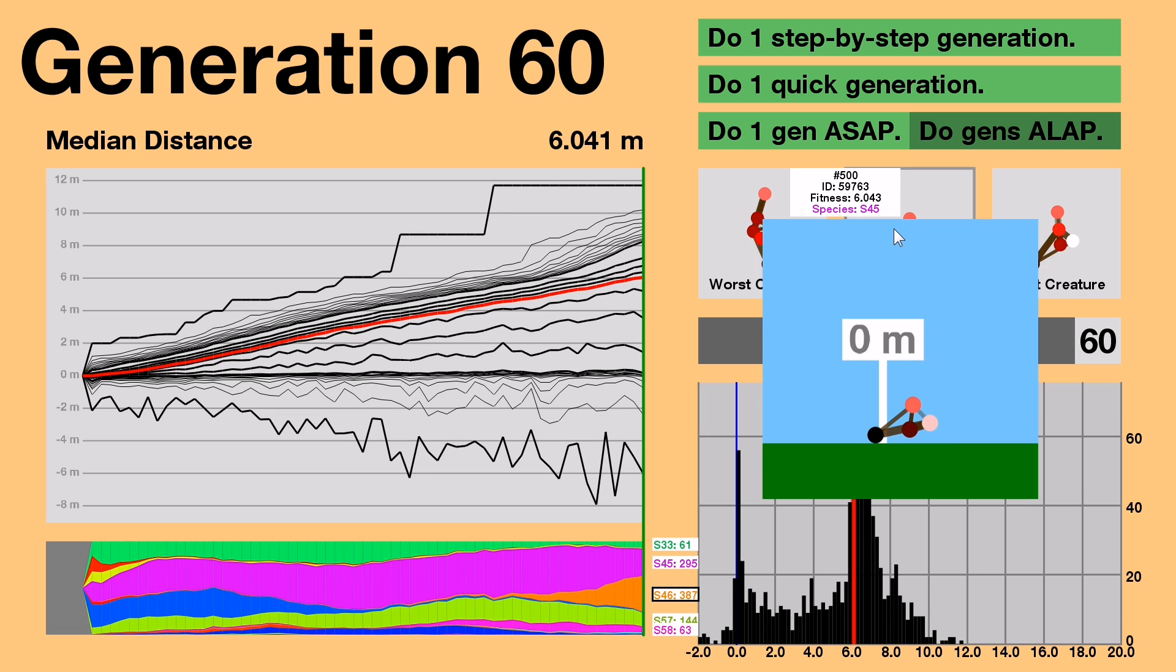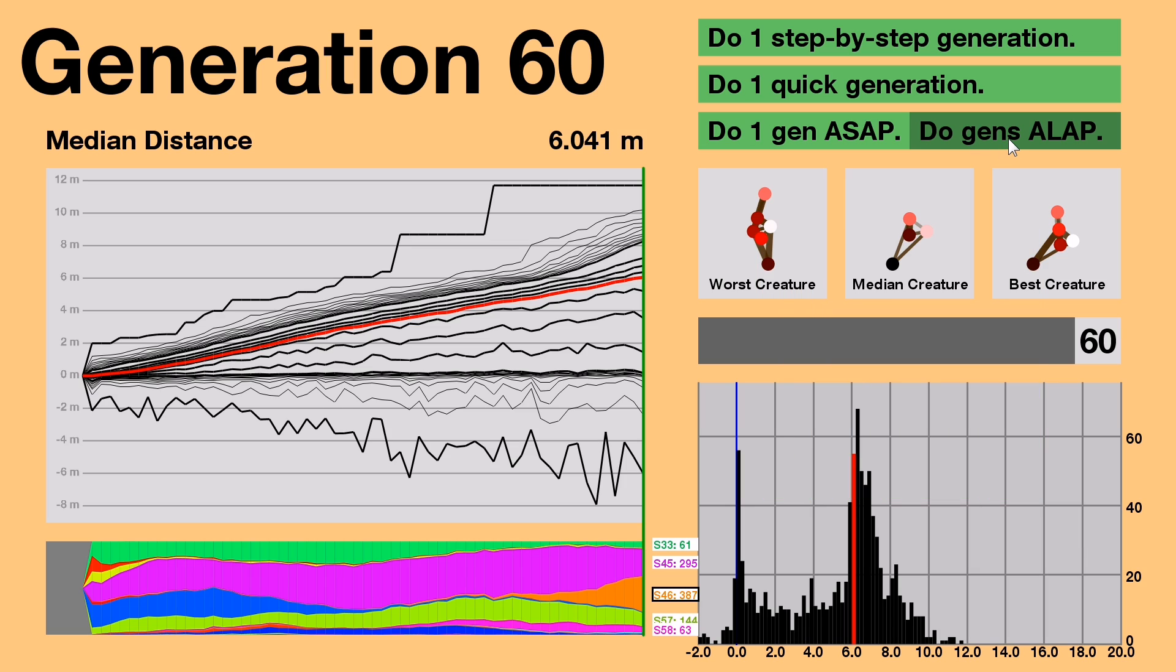Wow. In just 10 short generations, S4-6 went from being a tiny fringe species to the plurality, taking it away from the long-reigning S4-5. I still don't know what they look like though, cause they haven't shown up in the best or median creatures yet. But I'm sure they'll pop up.